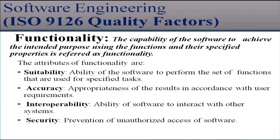The first factor is functionality. Functionality is the capability of the software to achieve the intended purpose using the functions and their specified properties. The attributes of functionality include suitability, accuracy, interoperability, and security. Suitability is the ability of the software to perform the set of functions used for specified tasks. Accuracy is the appropriateness of results in accordance with user requirements. Interoperability means ability of the software to interact with other systems. Security means prevention of unauthorized access to the software.